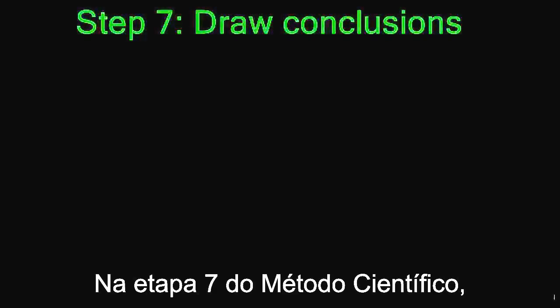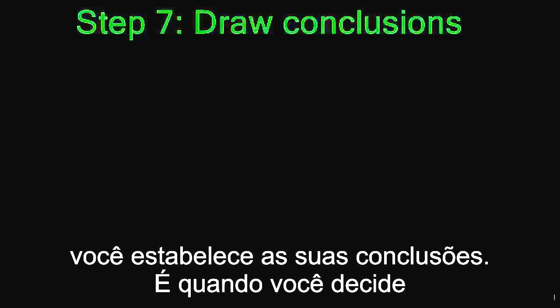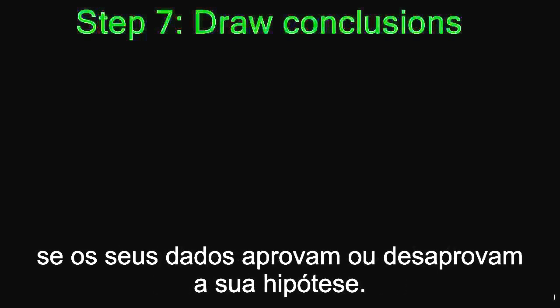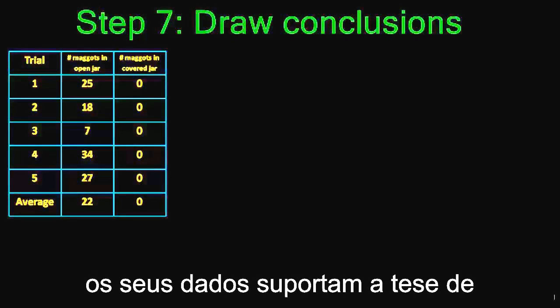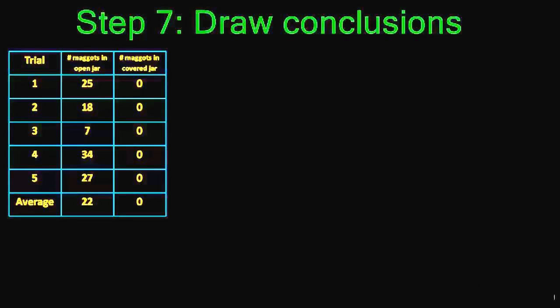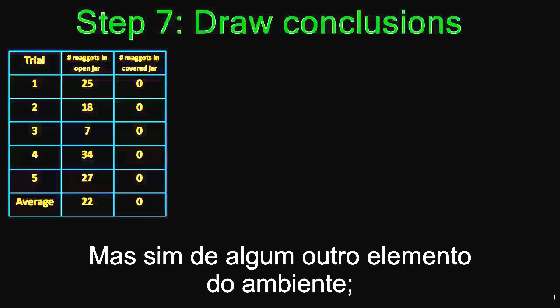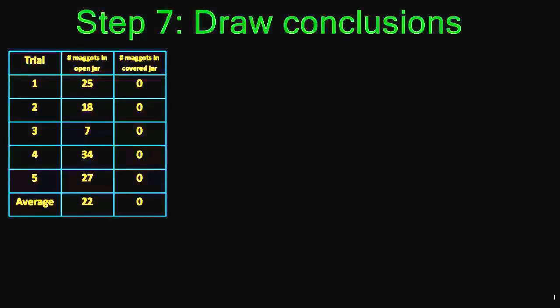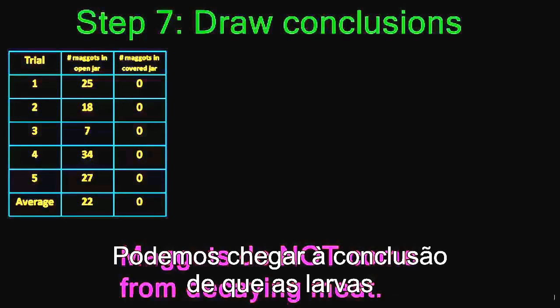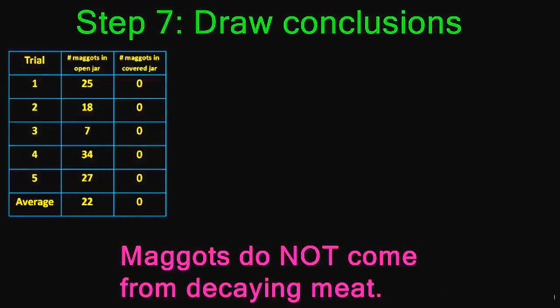In step 7 of the scientific method you draw your conclusions — deciding whether your data supports or disproves your hypothesis. In the case of Redi's experiment, his data supported the idea that maggots do not come from decaying meat but rather from another element in the environment, such as flies. Based on this information, we can conclude that maggots do not come from decaying meat.